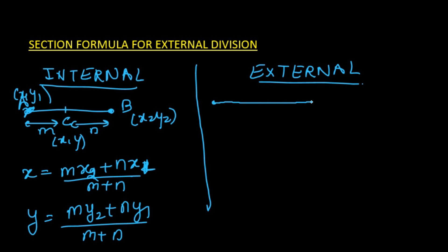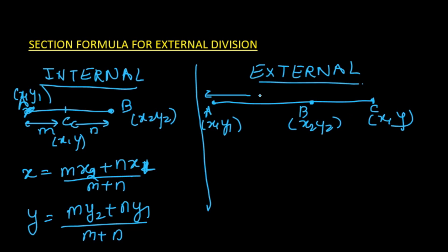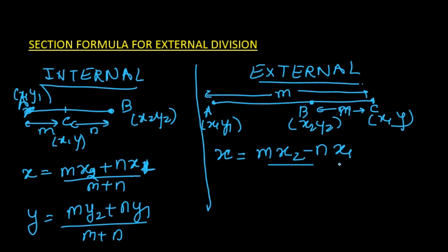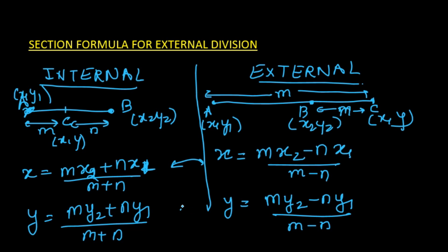For external division, with A as (x₁, y₁) and B as (x₂, y₂), and the point C dividing in ratio m:n, the direct formula is: x-coordinate = (m·x₂ − n·x₁)/(m−n) and y-coordinate = (m·y₂ − n·y₁)/(m−n). Note the negative signs in both numerator and denominator. You can either apply this formula directly or convert external to internal division.